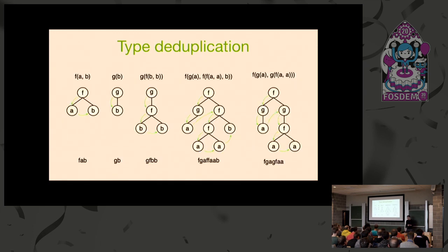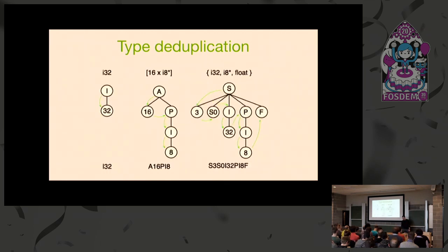Our attempt to solve the type deduplication problem was inspired by tree automata and ranked alphabets. A ranked alphabet is a set of symbols where each symbol has a number of parameters — think of it as functions that you combine to form trees. Each tree can be represented as a single string. Our task is to encode the types into such trees, convert them into strings, and then compare them.